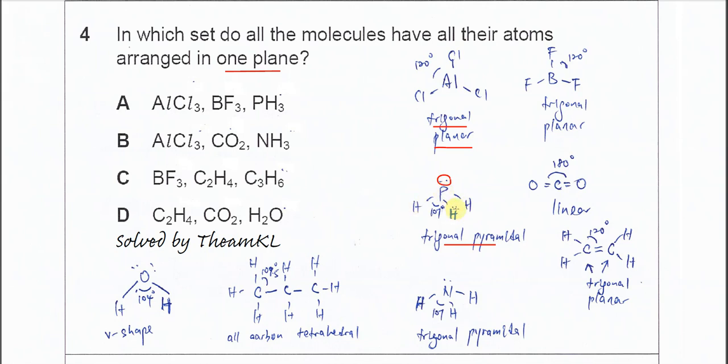CO₂ is linear with a bond angle of 180 degrees. Whenever the compound is linear or V-shaped or bent, all these atoms will be in the same plane. This means the C and the two O atoms will be in one plane.